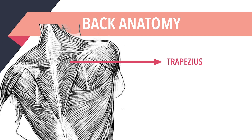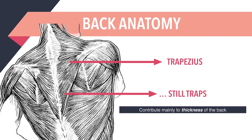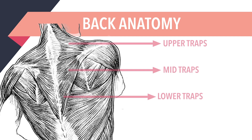Let's start with the trapezius, also known as the traps. The trapezius muscles are located between your shoulder and neck. As they extend higher than the collarbone height, they are most noticeable from the front. It's important to note that they actually reach all the way down to the lower back region. The traps contribute mainly to the thickness of the back and consist of three sections of muscle fibres: the upper traps, middle traps, and lower traps fibres.